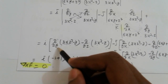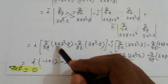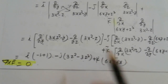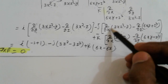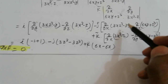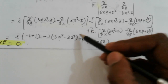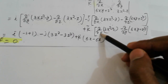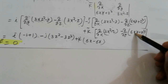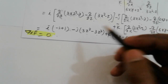For the i-term: partial derivative with respect to y, keeping x and z constant — only the term with y matters, so the derivative of (3xz² - y) gives -1, and derivative of (3x² - z) with respect to z is -1, giving 0. For minus j: partial with respect to x gives 3z², partial with respect to z gives 3z², result is 0. For k: partial of (3x² - z) with respect to x gives 6x, partial of (6xy + z³) with respect to y gives 6x, so result is 0. Therefore nabla cross F equals 0.